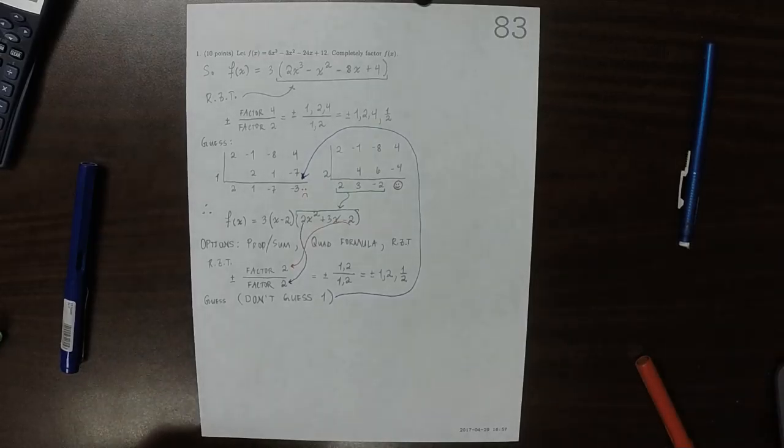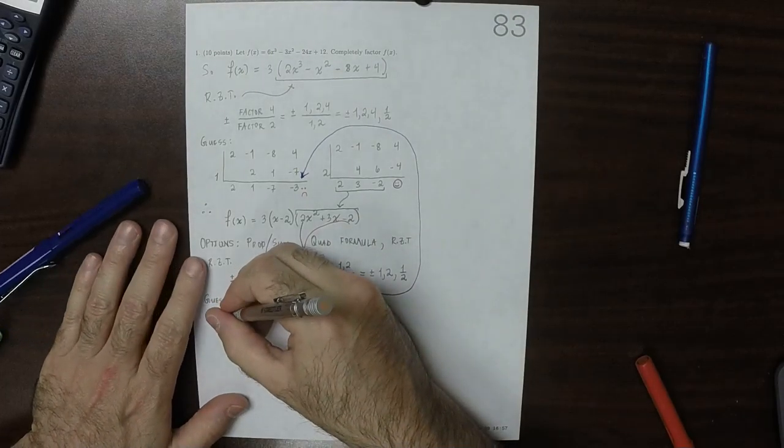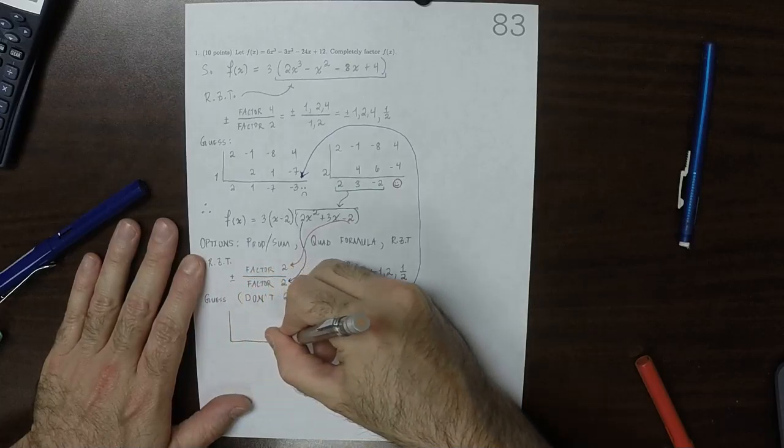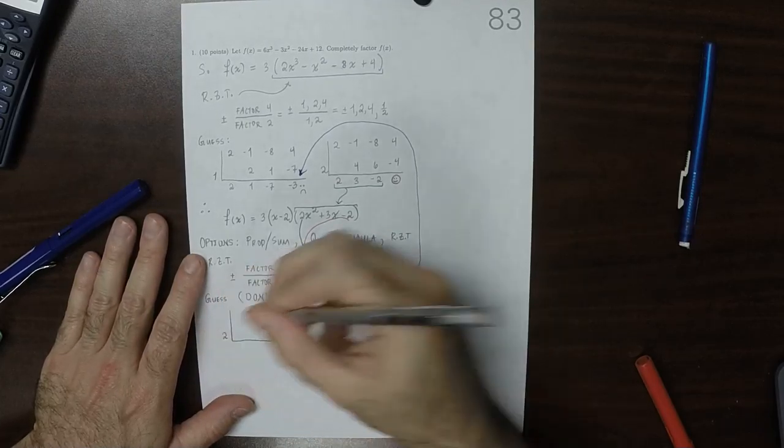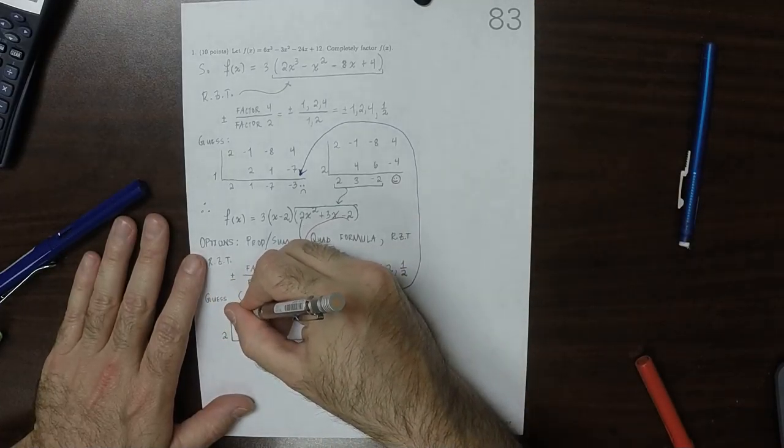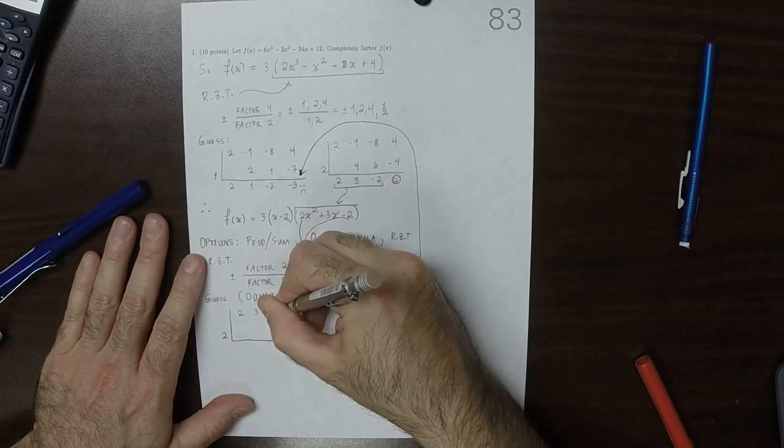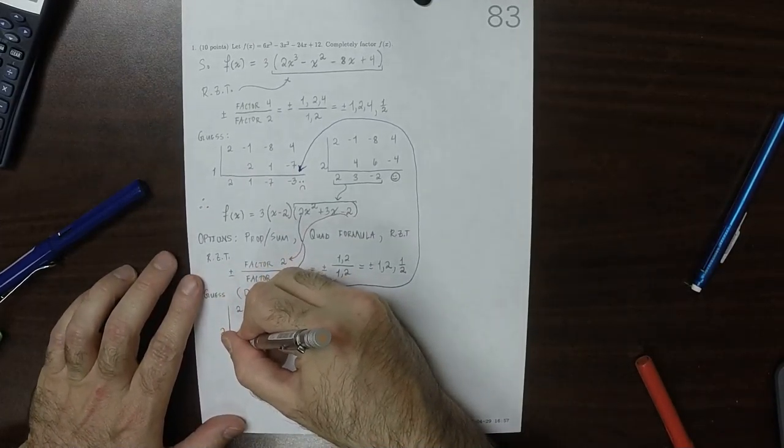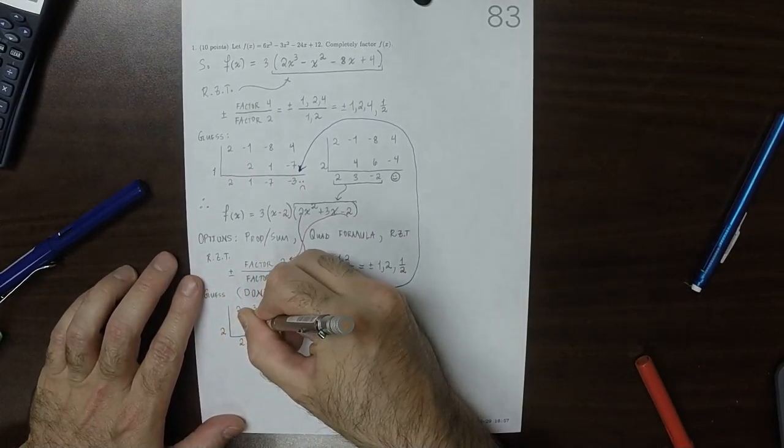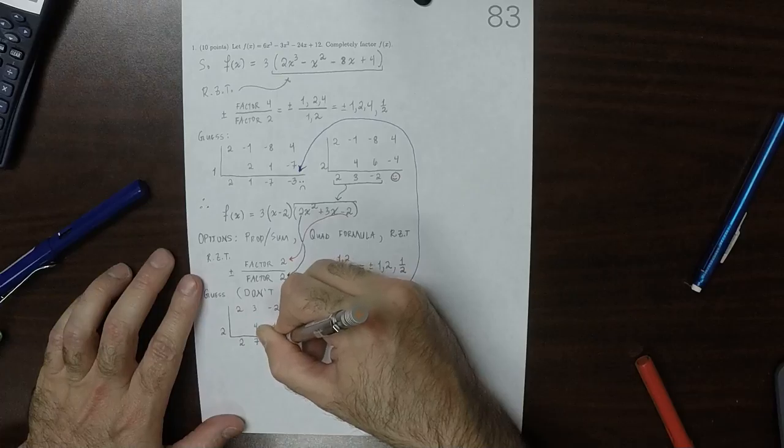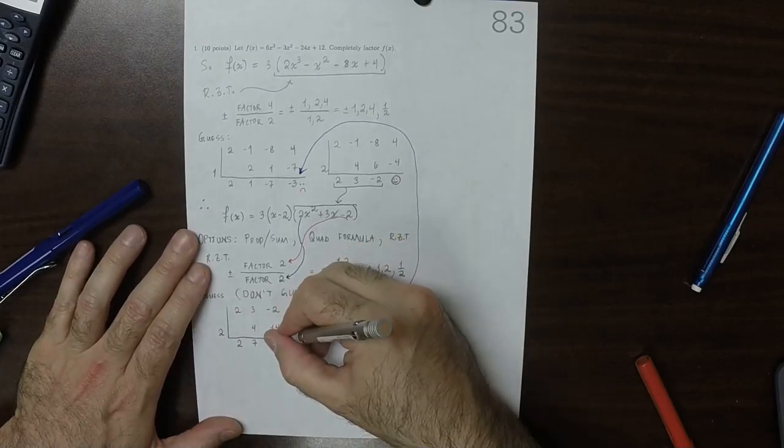Okay, so maybe let's guess 2 again. So 2 worked last time. Why not? Maybe it'll hit again. So then now the coefficients are 2, 3, negative 2. So then carry, and then multiply, add, multiply, add. Okay, that was way too big. So it's not 2.